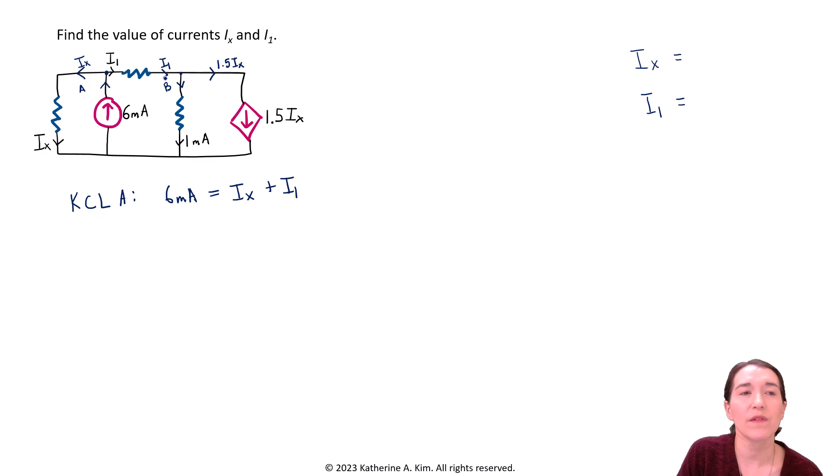And you can see now we've defined this current is going in I1 and these two currents are coming out. So let's apply KCL again, Kirchhoff's current law at intersection B here. So KCL at this second intersection at the node. And we see we have I1 is the current coming in. And then you have two currents coming out. One is going to be one milliamp. And then the other is going to be plus 1.5 Ix. All right.